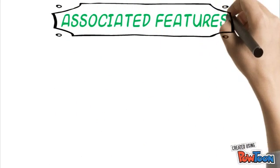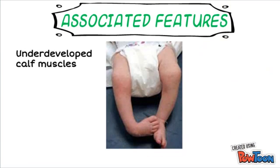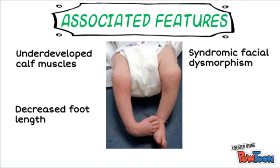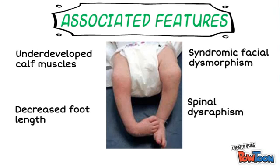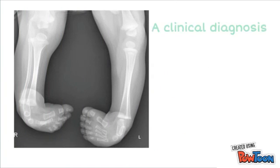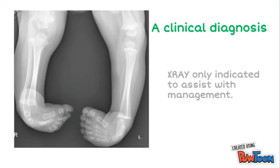Other commonly associated features include underdeveloped calf muscles and foot shortening on the affected limb. It is often an isolated problem in an otherwise healthy newborn, but can be accompanied by other deformities if a syndrome is present — this must be kept in mind. True clubfoot is a clinical diagnosis; all four deformities must be present and not correctable on passive movement. X-rays would only be indicated to assist with management.